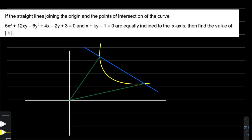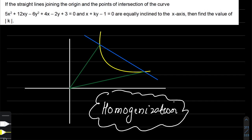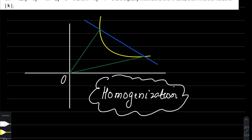We have said that this pair of straight lines are equally inclined to the x-axis. To solve these kinds of questions, you would remember that in pair of straight lines there is a concept called homogenization. This is a very important concept that helps you find the pair of straight lines connecting the origin to the intersection of a second degree curve by a straight line. The pair of straight lines passing through the origin is a second degree homogeneous equation — all terms are of second degree, no first degree, no constant term.